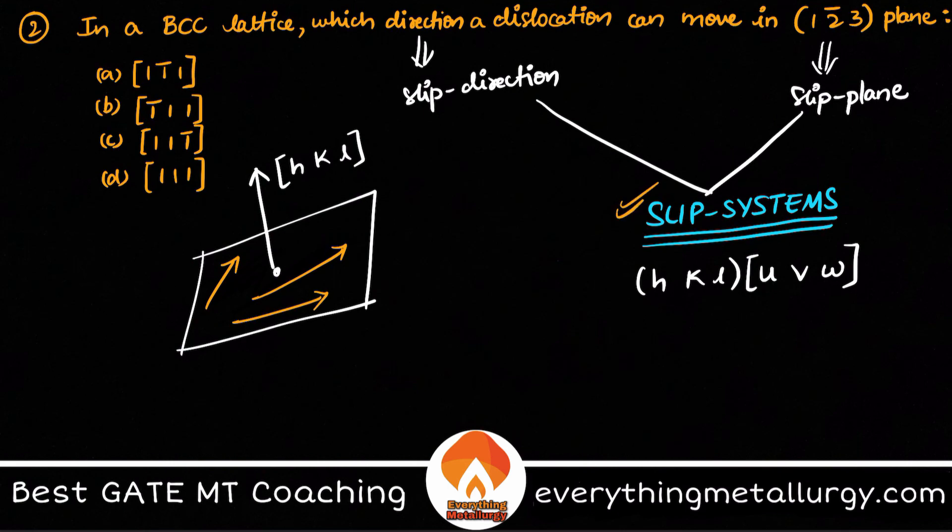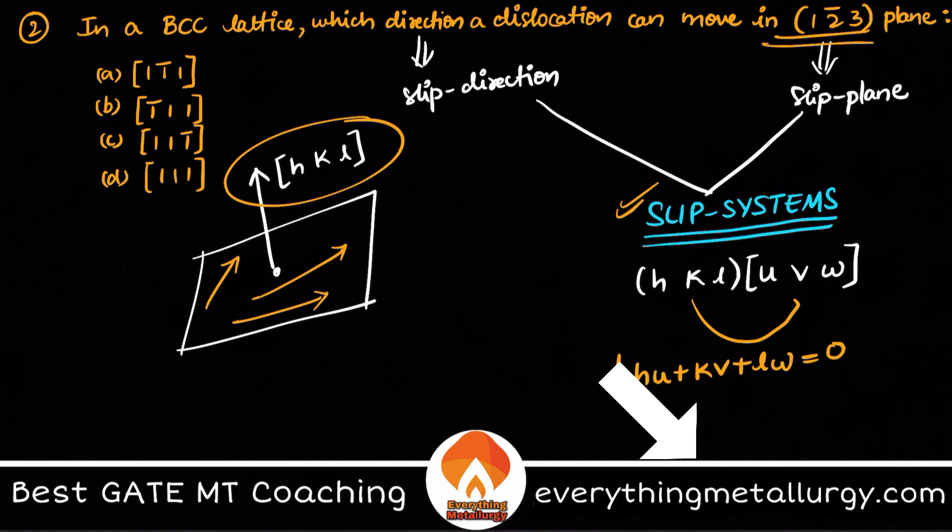So we know that the plane, or our plane normal, is what? (1 2̄ 3). So what is the condition for the particular slip system, or a particular direction to lie in a particular plane, is very simple: hu + kv + lw equal to zero. How did we get this?